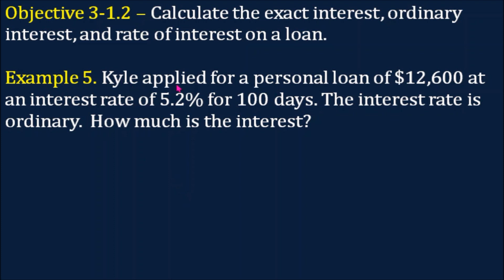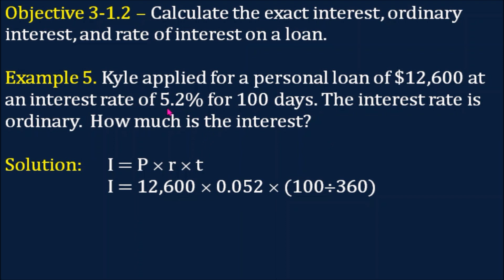Example number 5: Kyle applied for a personal loan of $12,600 at an interest rate of 5.2% for 100 days. The interest rate is ordinary. Using the formula I equals P times R times T: P is $12,600, R is 0.052, and because the interest rate is ordinary, T is 100 divided by 360. Performing the operations, the interest is $182.